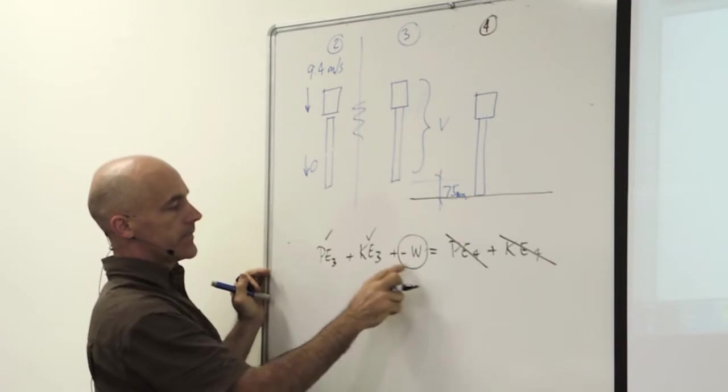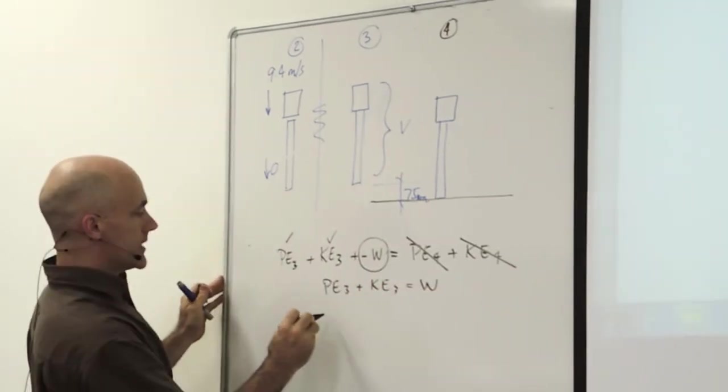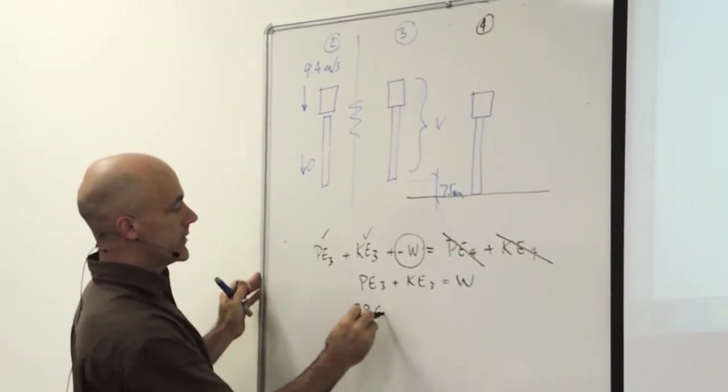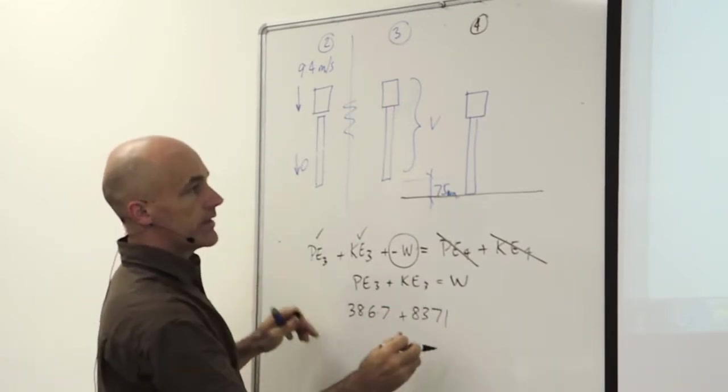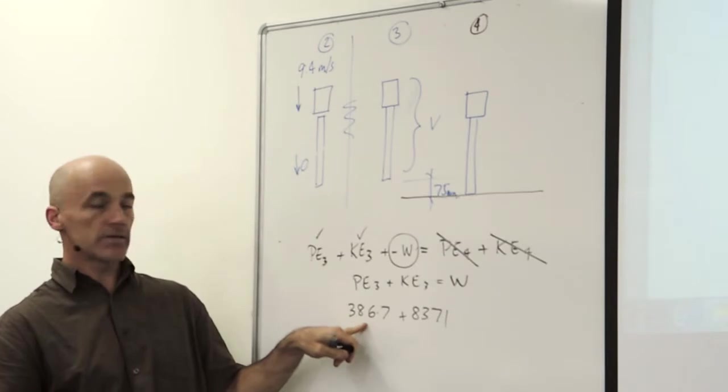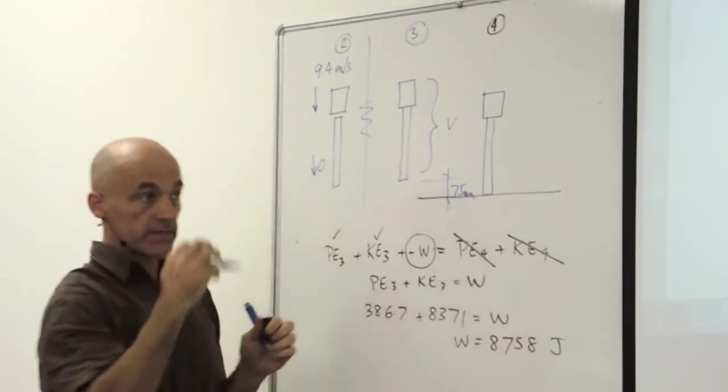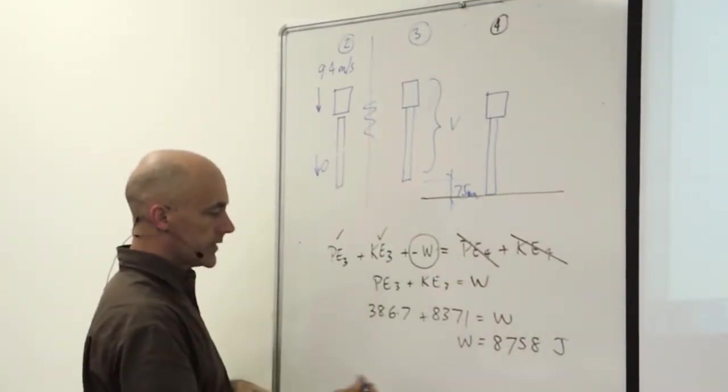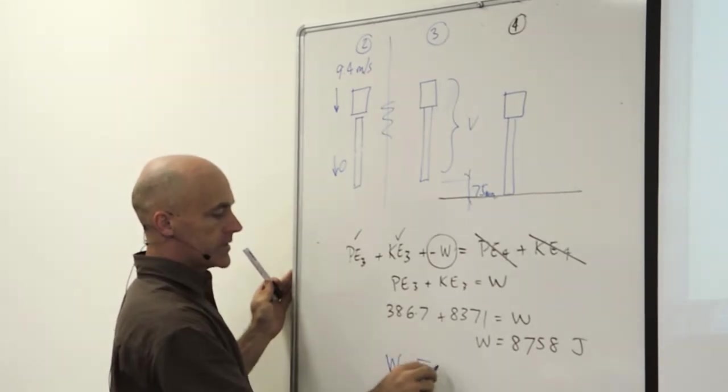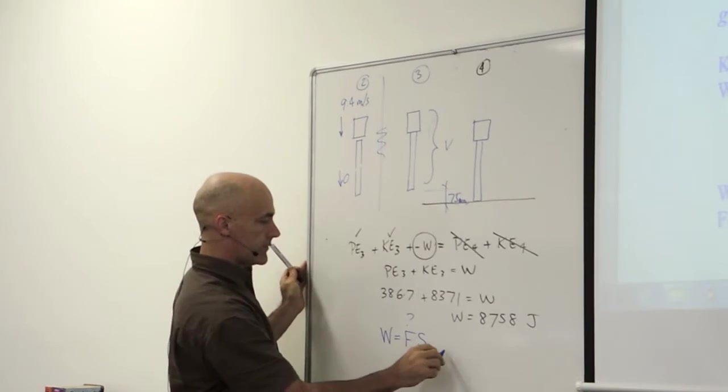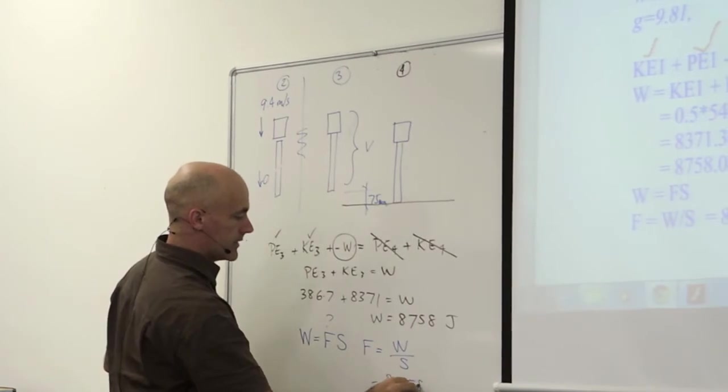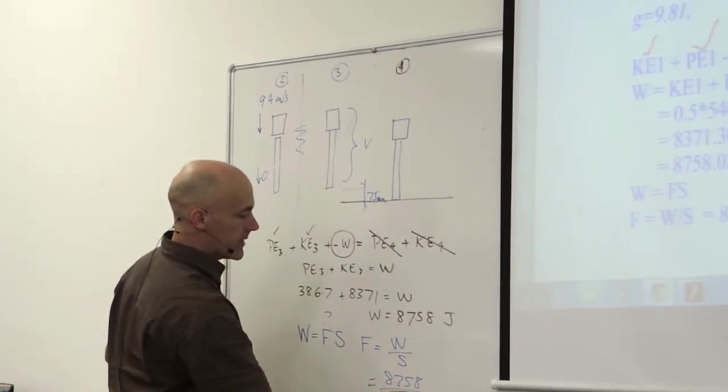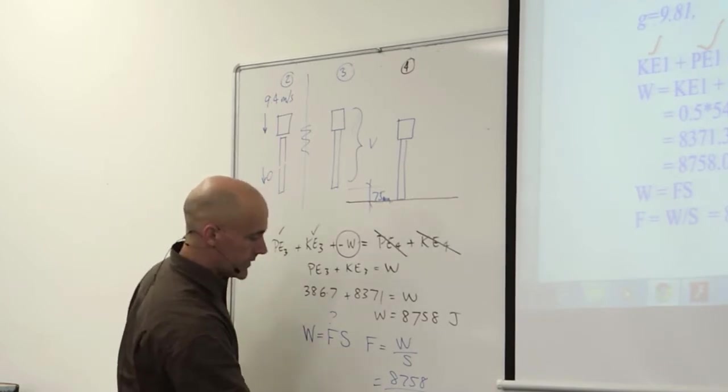PE3 plus KE3 equals the work done. The potential energy was 386.7, that's 75 millimeters worth. The kinetic energy was 8031. You notice that it's mostly kinetic energy, but there is a little bit of potential energy adding on. So at 8.7 kilojoules, the ground stopped the pile. That's my work. From the formula work equals force times displacement, I'm trying to find what this force is. Force is work divided by displacement, that's my work, 8758, divided by 75 millimeters, which is 120 kilonewtons.